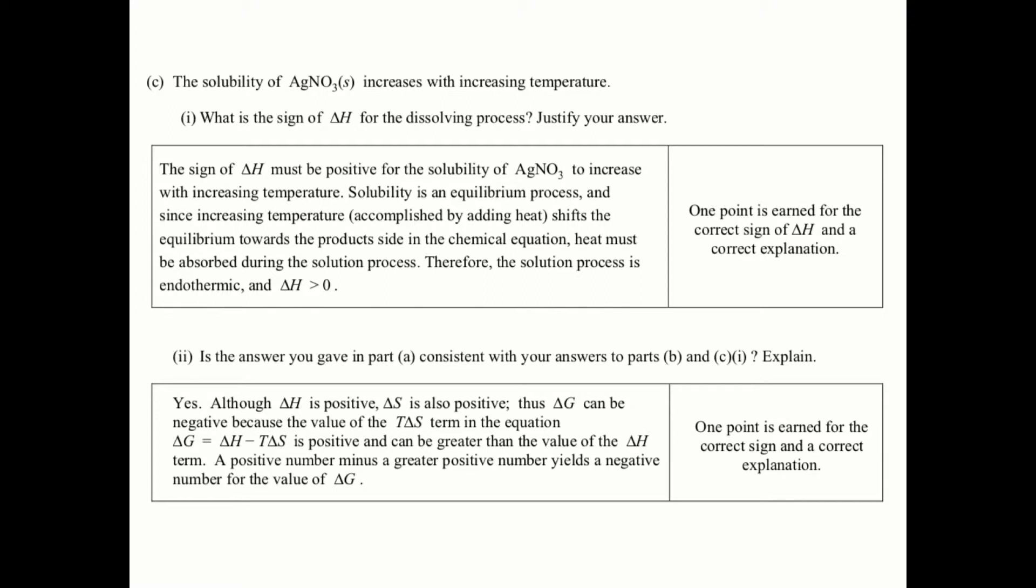This means that delta G can be negative if the temperature is high enough. Since delta H is positive, that does not contribute to the spontaneity. However, delta S is responsible for your delta G being negative. So we say that delta S is driving the reaction. Yes, it is consistent in the sense that your delta G can be negative as long as your temperature is high enough.